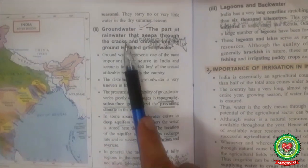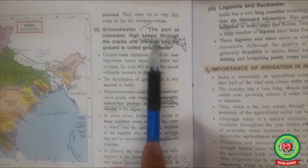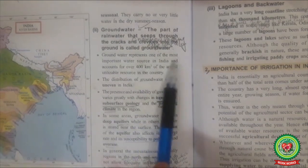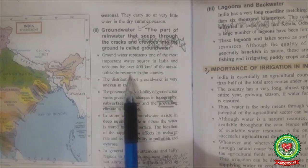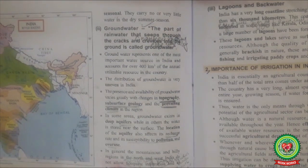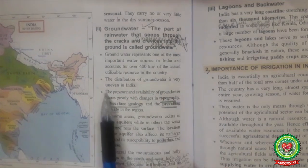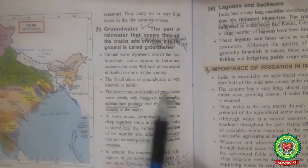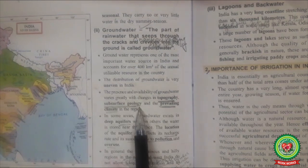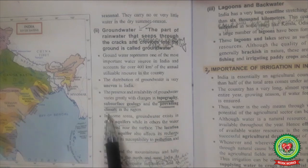Groundwater means the part of rainwater that seeps through the cracks and crevices into the ground. Crevices means a narrow opening in a rock or wall. Groundwater represents one of the most important water sources in India and accounts for 400 cubic kilometers of annual utilization. In the USA, especially in rural areas, 50% of the water used is groundwater. The distribution of groundwater is very uneven in India. Its availability varies greatly with changes in topography — natural and man-made features — subsurface geology, and the prevailing climate.